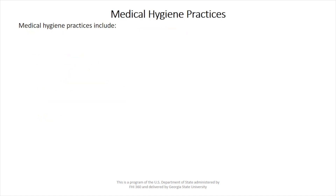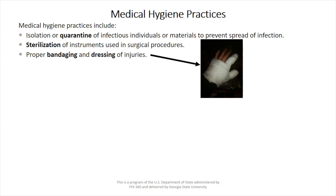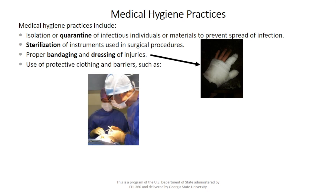Let's start with medical hygiene practices. They include quarantine or isolation, sterilization of instruments, proper bandaging or dressing of injuries like what you see on the picture here, and use of protective clothing and barriers such as the cap, the gown, the gloves, the mask, and eyewear.